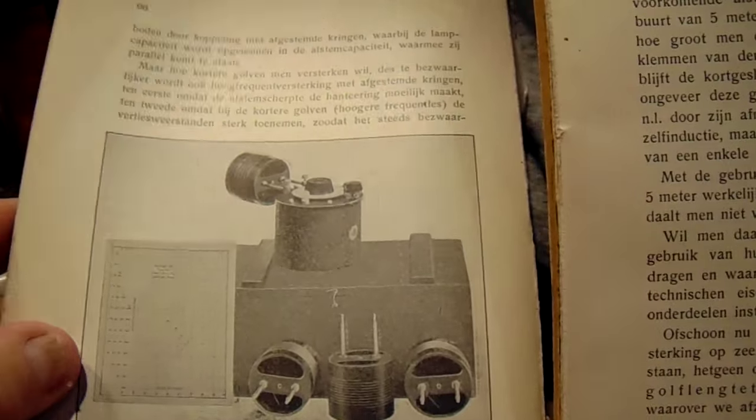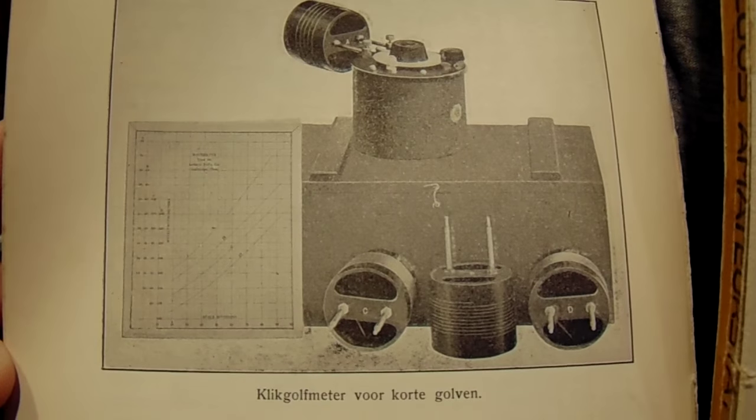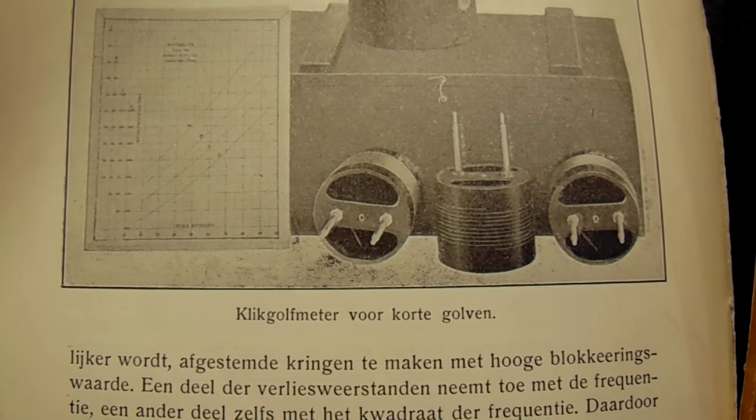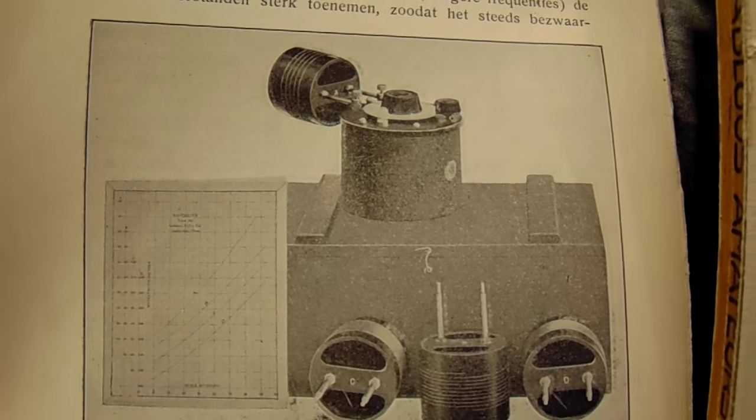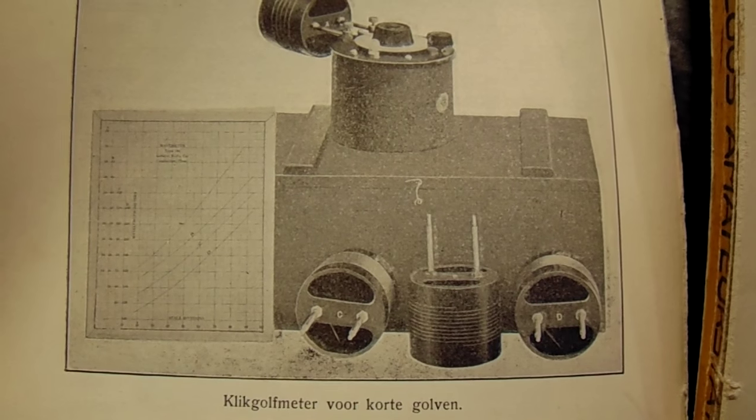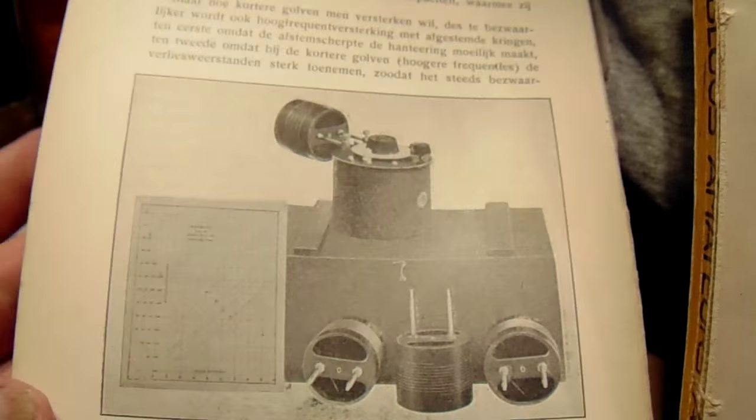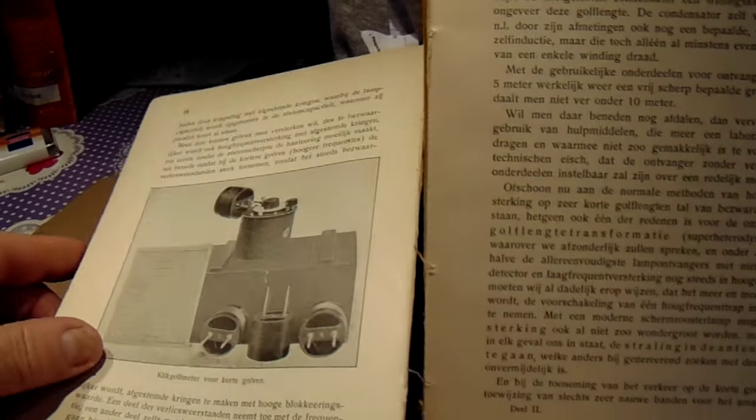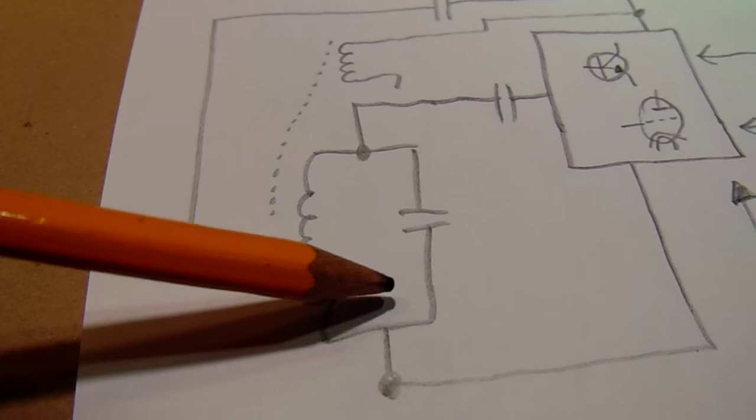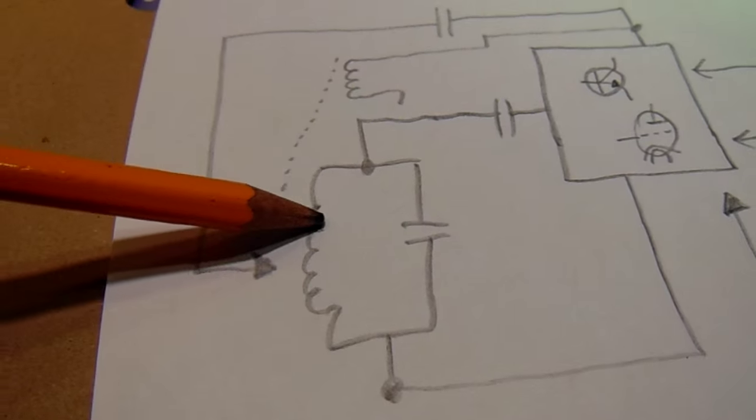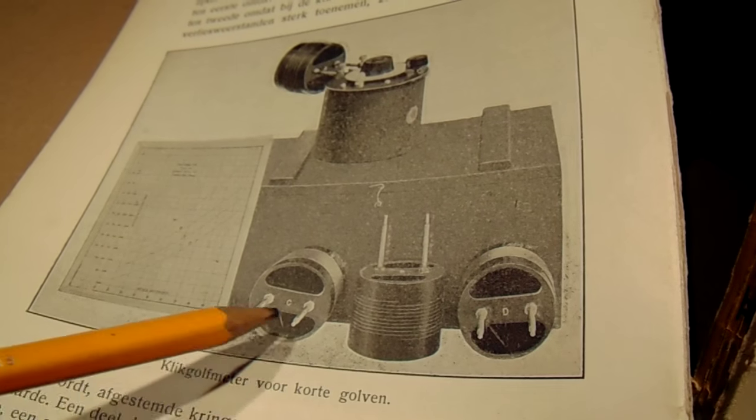And here is a meter for shortwave. I published this circuit also on YouTube. When this meter, in fact it's nothing more or less than this thing, a tank circuit with variable coils. Here I've drawn one coil. Here you see different coils for different frequencies.